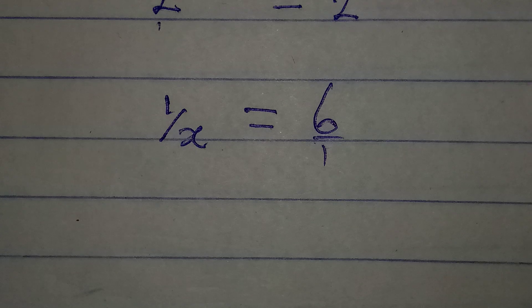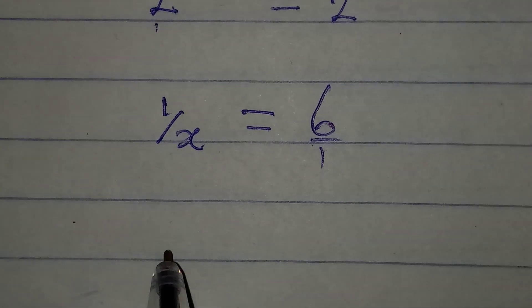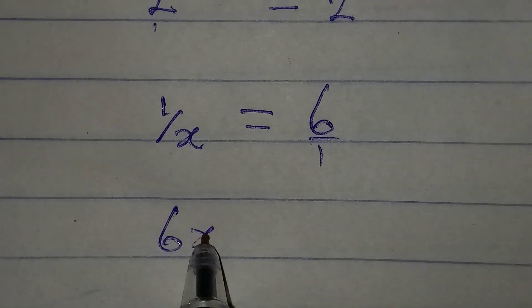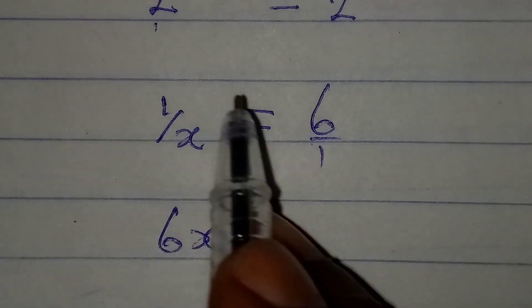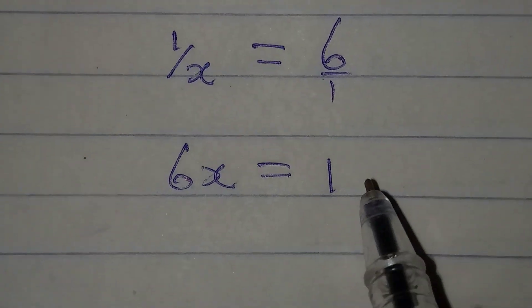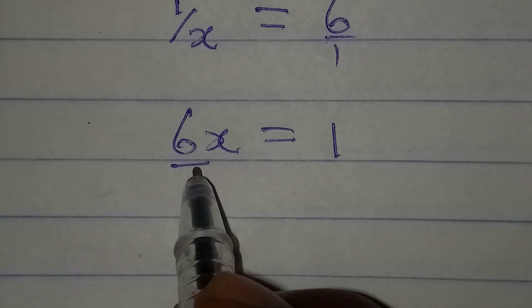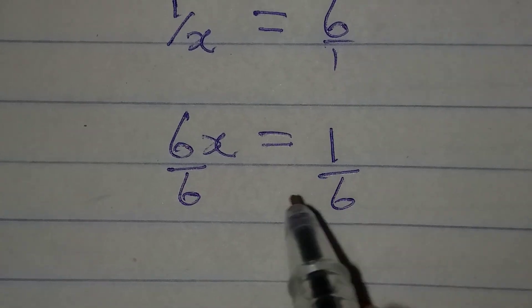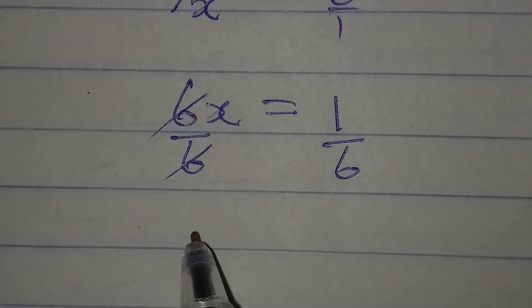Since we are looking for the value of x, we cross multiply so that 6x will be equal to 1 times 1, that is 1. And at this point we divide by 6, 6 will cancel 6.